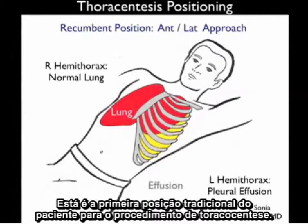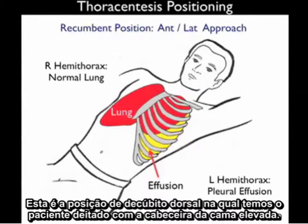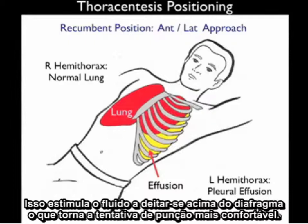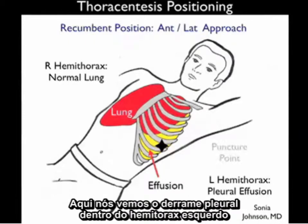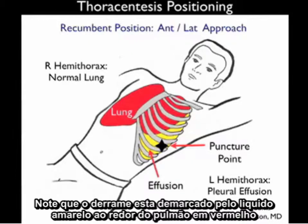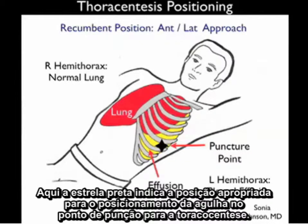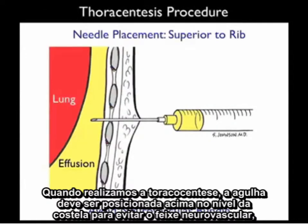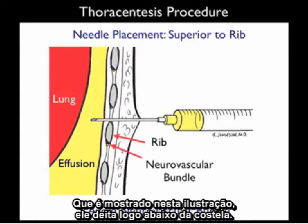This is the first traditional patient position for thoracentesis: the recumbent position, in which the patient lies down with the head of the bed elevated. This encourages the fluid to layer out above the diaphragm, making it more amenable to a puncture attempt. We see a pleural effusion within the left hemithorax, denoted by the yellow liquid around the red lung. The black star indicates the appropriate needle puncture point. When performing a thoracentesis, the needle should be positioned above the level of the rib to avoid the neurovascular bundle, which lies just below the rib.